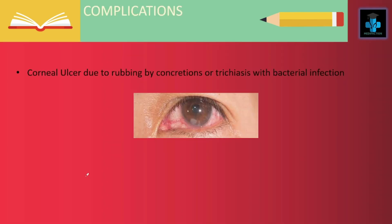Now let's see the complications of trachoma. The one major complication is corneal ulcer, which is due to rubbing by concretions or trichiasis along with bacterial infections.